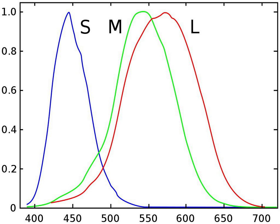LMS is a color space represented by the response of the three types of cones of the human eye, named for their responsivity peaks at long, medium, and short wavelengths.